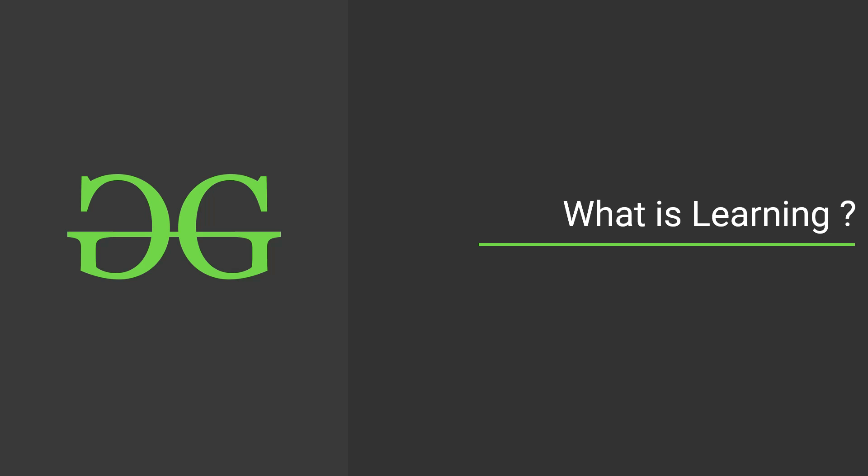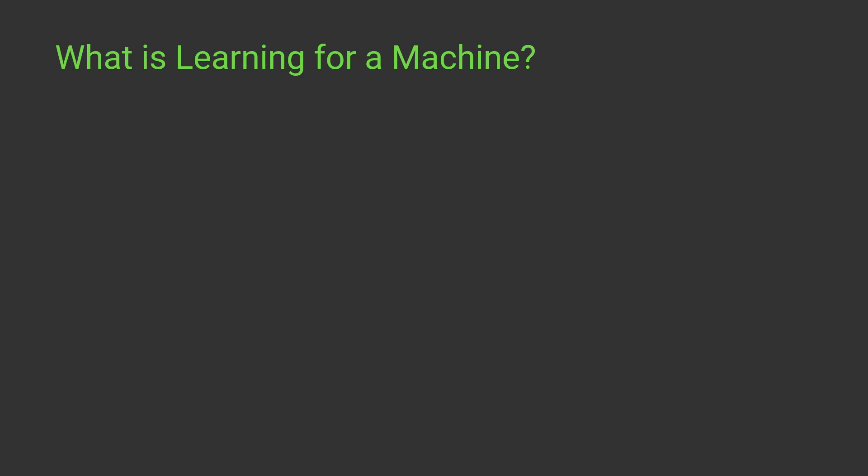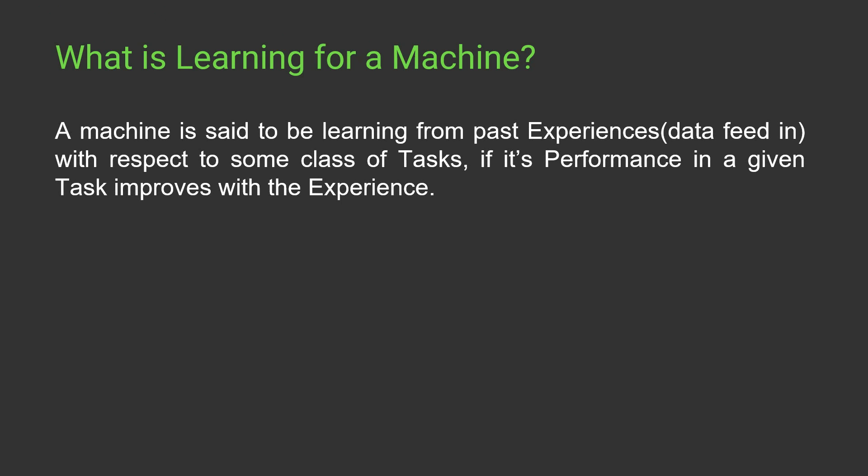Now we are understanding machine learning in depth, but what exactly does learning mean? How can we teach something to a machine? A machine is said to be learning from past experience with respect to some class of tasks if its performance in a given task improves with experience. A machine is said to be learning if we feed it a task and it keeps on improving its performance.